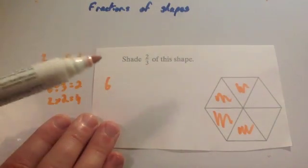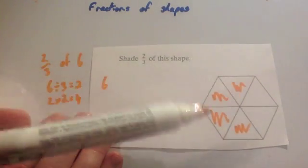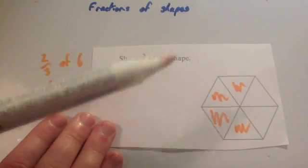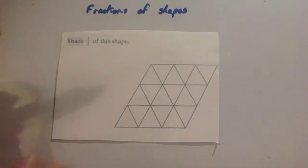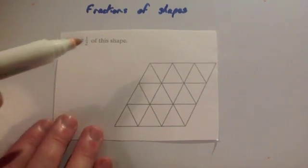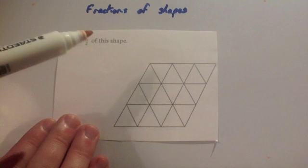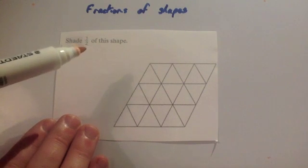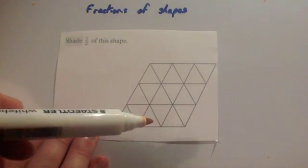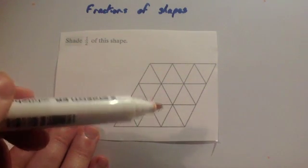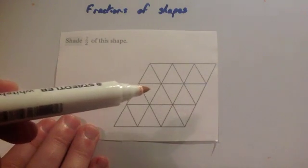These questions are usually quite simple, so you can just shade in two out of every three. Finally, we've been asked to shade in a half of this shape. Again, you could say shade one out of every two: shade, not shade, shade, not shade, shade, not shade, shade, not shade.